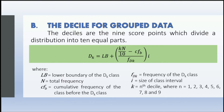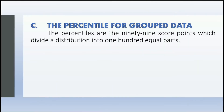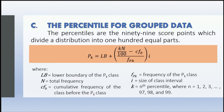Lastly, we have the percentile for group data. Percentiles are the 99 score points which divide a distribution into 100 equal parts. Just like the quartile and decile, we have the same formula but instead of 4 or 10, we use 100. So we have P sub k = lb + [(kn/100 − cf sub b) / f sub Pk] × i.